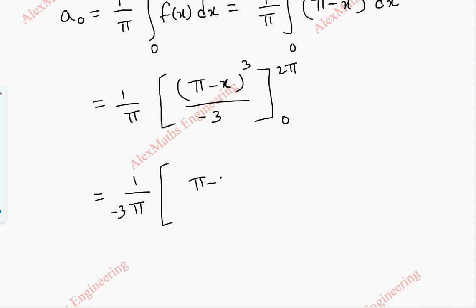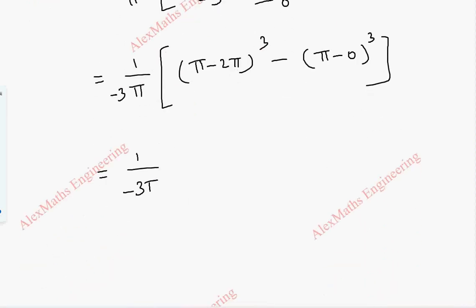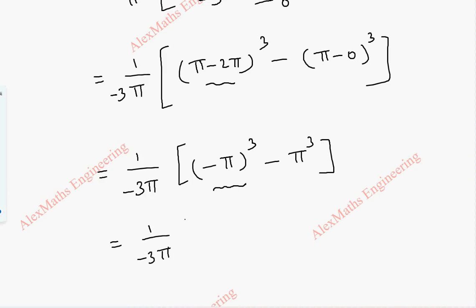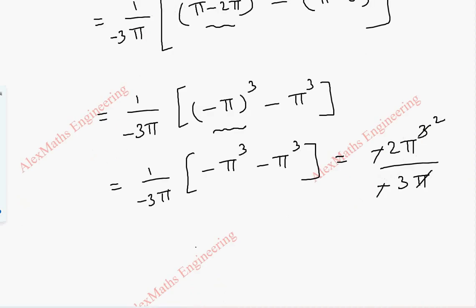Applying the limits: (π − 2π)³ minus (π − 0)³. This becomes (1/(−3π)) times [(−π)³ − π³]. Now (−π)³ is −π³, so we have (1/(−3π)) times (−π³ − π³) = (1/(−3π)) times (−2π³). This gives −2π³ / (−3π) = 2π²/3. So a₀ = 2π²/3.